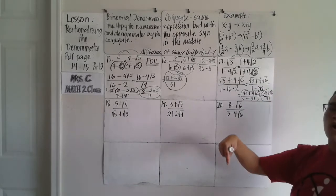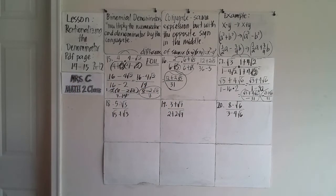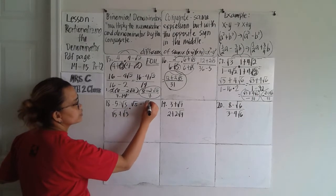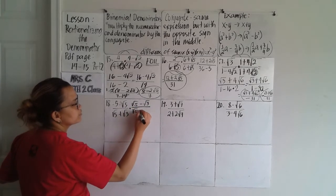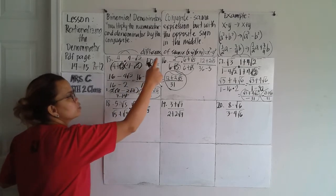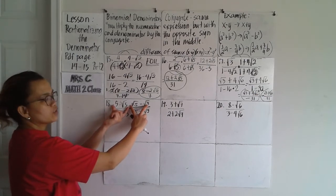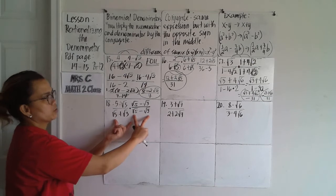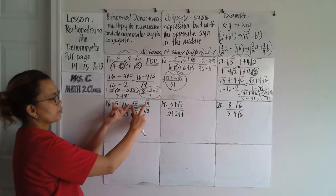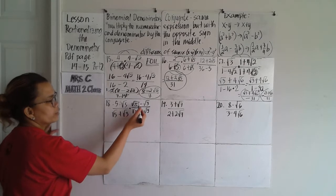Here's a question — leave your answer in the comments below: five minus square root of five over square root of five plus square root of three. The conjugate of the denominator, square root of five plus square root of three, is square root of five minus square root of three. We can use difference of squares for the denominator since those are conjugates, but for the numerator we cannot use difference of squares — so I'm going to use the FOIL method there.